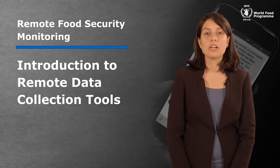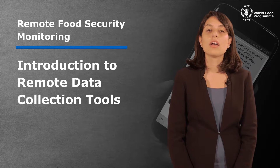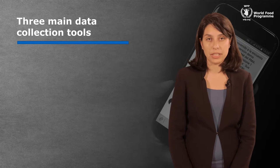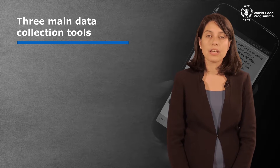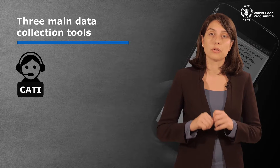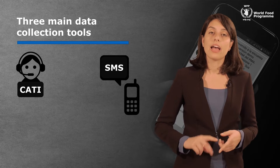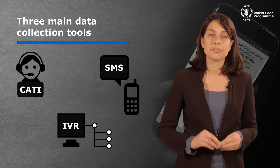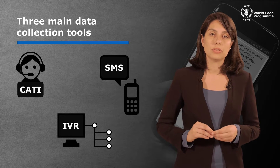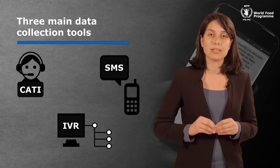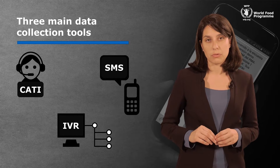At the end of the video, you will know what the various options are. At the moment, at WFP, we use three main tools to collect food security data remotely. These are CATI, which stands for Computer Assisted Telephone Interviewing, SMS, and IVR, which stands for Interactive Voice Response. All of these tools can be used to contact respondents via basic mobile phones, as internet connection or data services are not required.